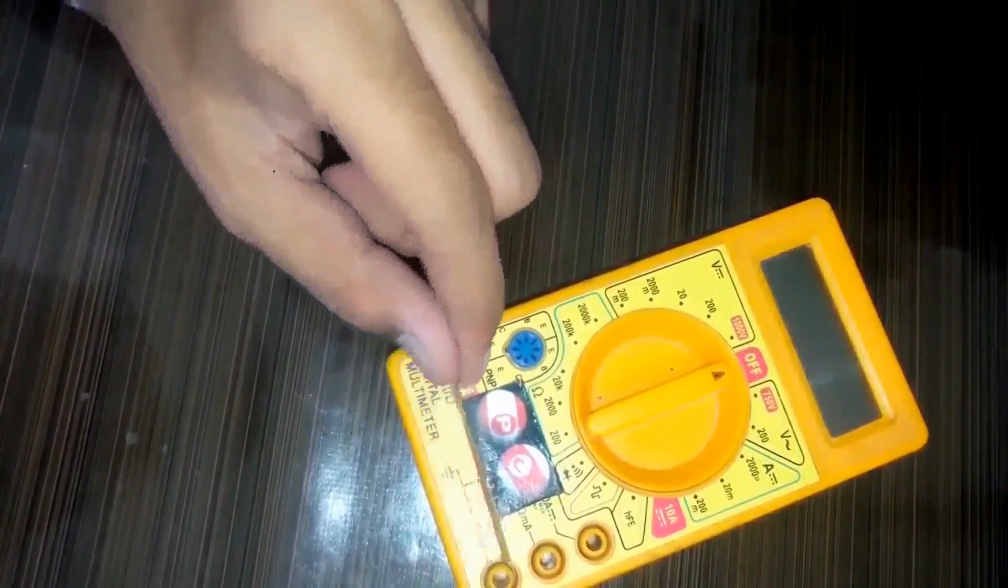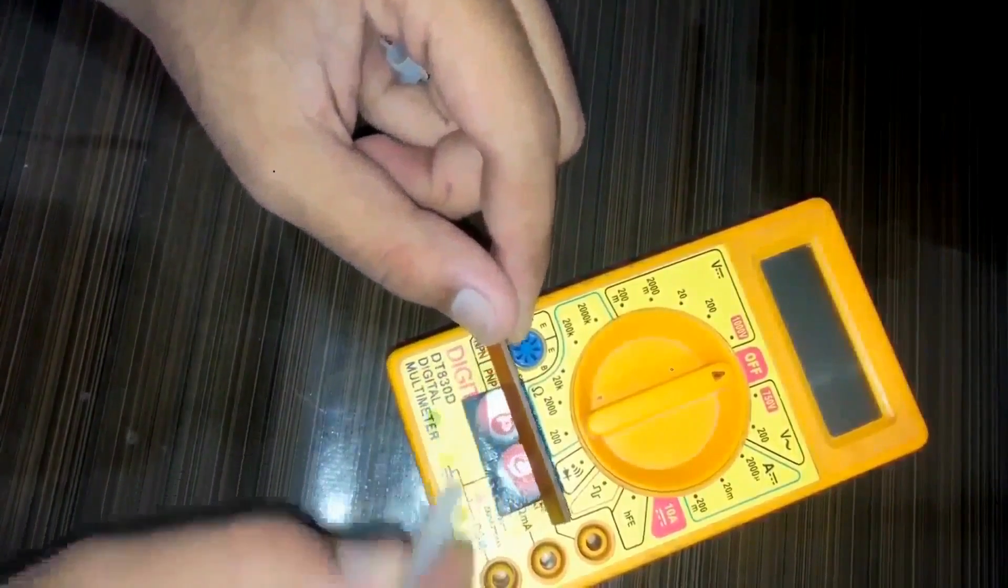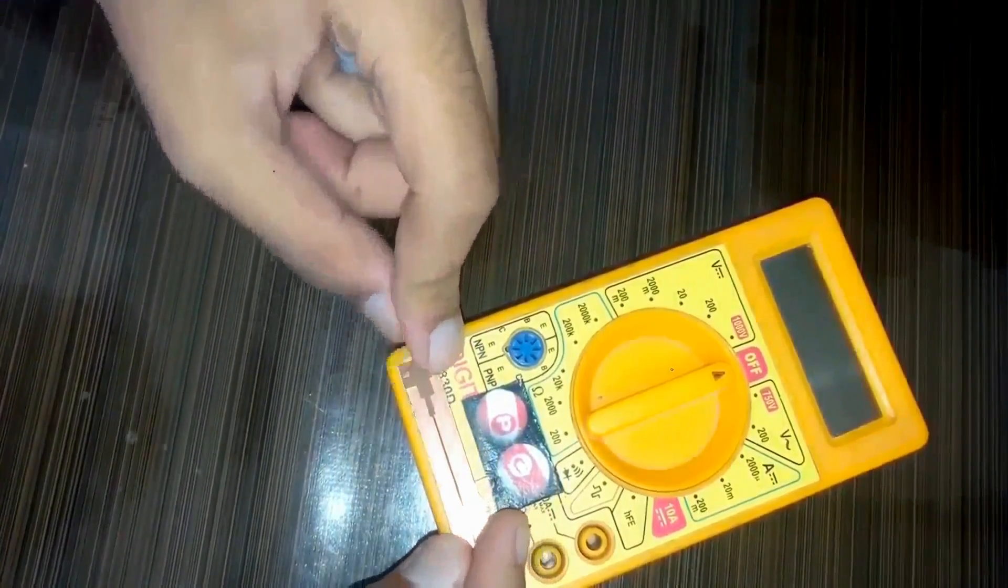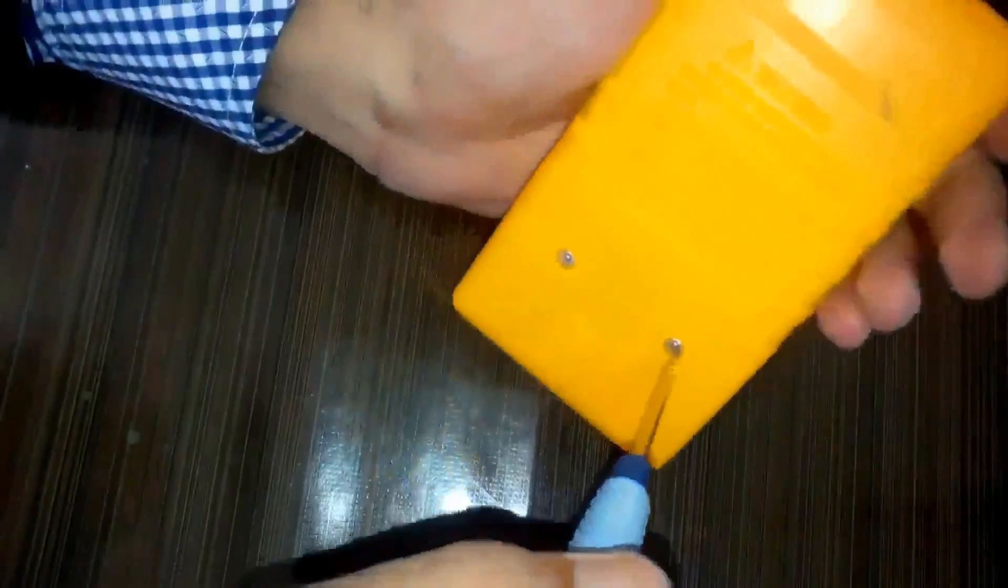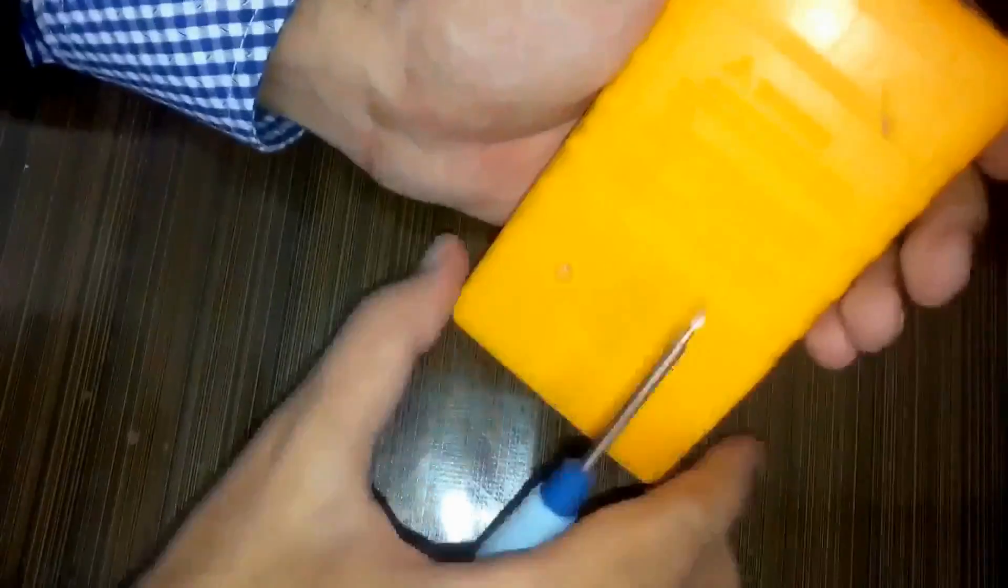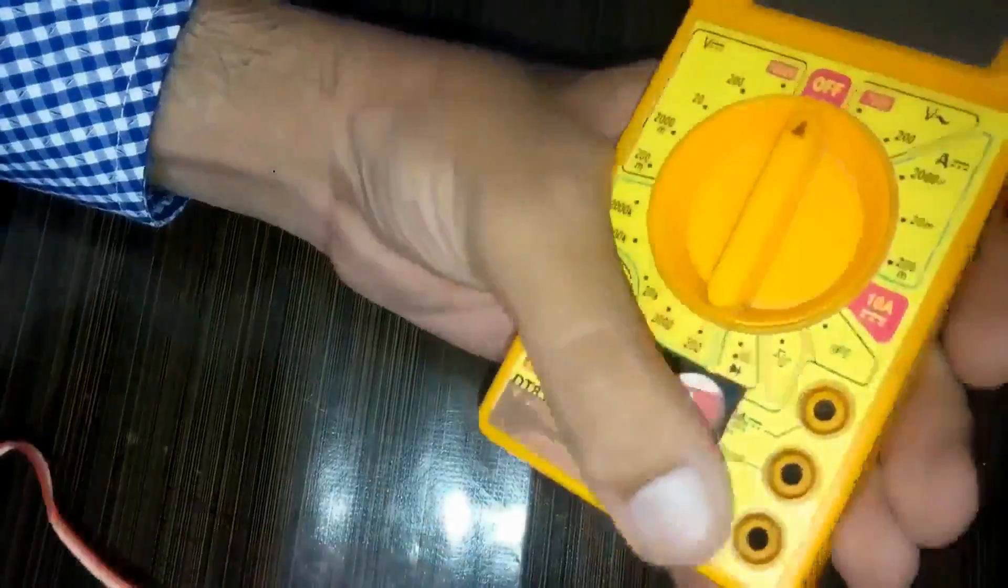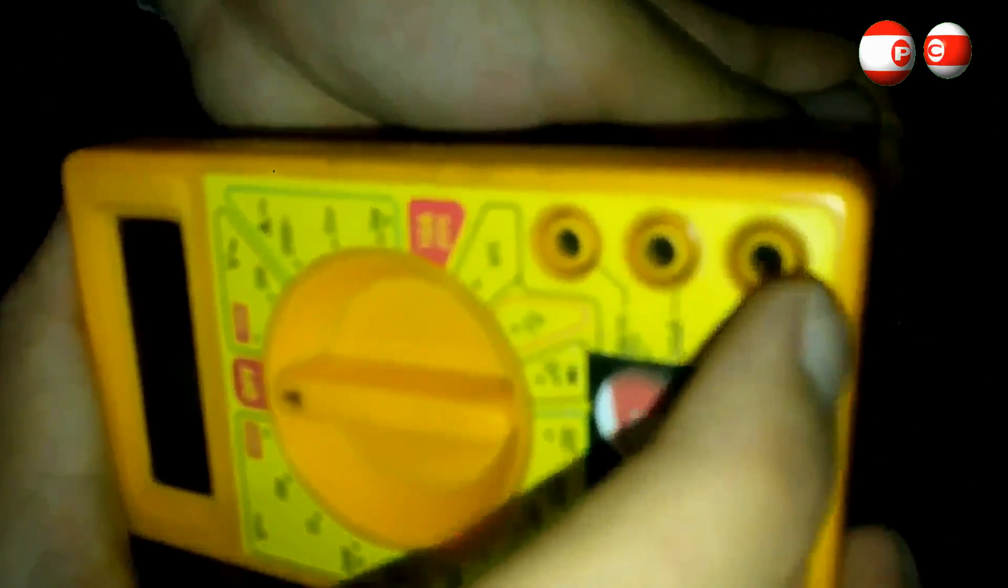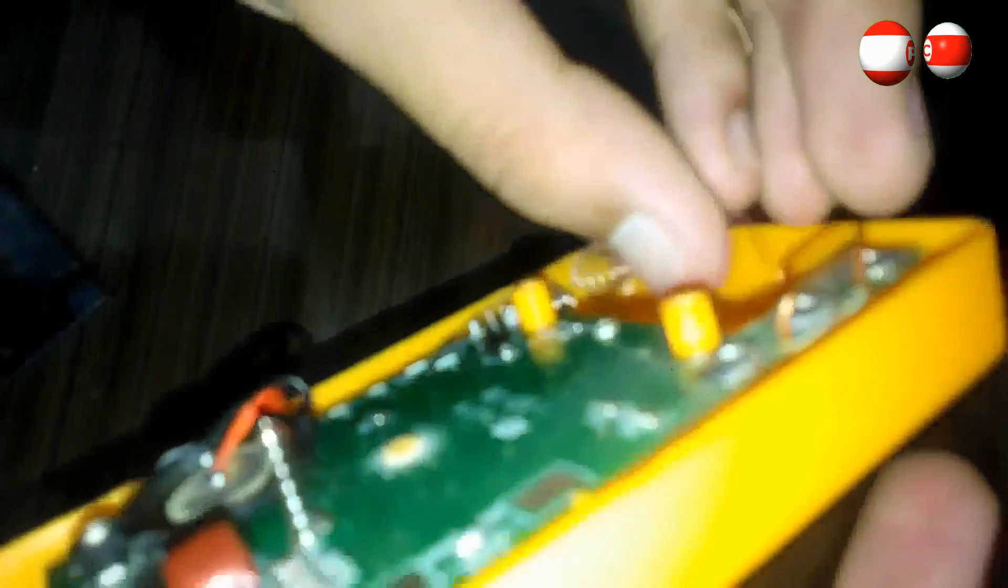Affix it on the multimeter. Now make connections of positive and negative strips to positive and negative terminals of the multimeter.